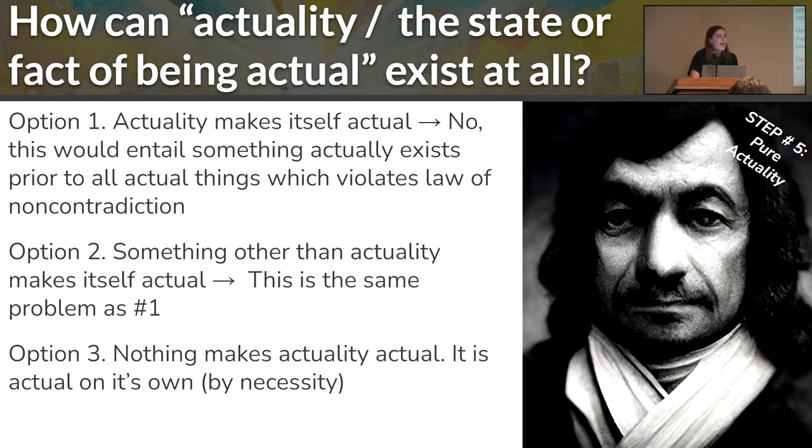Now, how can actuality, or the state of being actual, or being itself, as it were, as a concept, exist at all? Well, it has the same three options as power. Either actuality makes itself actual, something other than actuality makes itself actual, or nothing makes actuality actual. It's been actual on its own, all the time, by necessity. And just like before, the first two options fail because they violate that logical law. So we're left with the fact that actuality has always been a thing. There's some being that always has been.